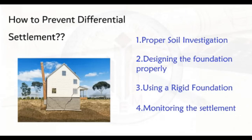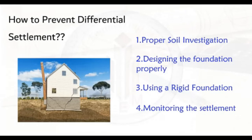The next prevention method is using a rigid foundation. Rigid foundations such as raft foundation or mat foundation can help prevent differential settlement by providing a uniform bearing surface for the structure. Finally, it is very important to monitor the settlement of the foundation over time to ensure it is not settling unevenly. If any problems are detected, they can be addressed before they cause damage to the structure.